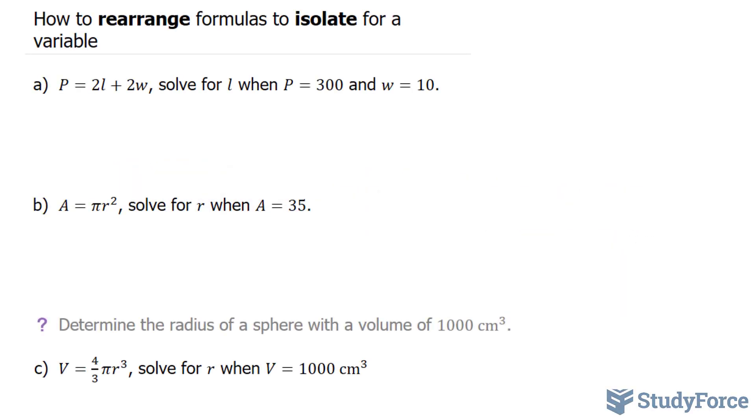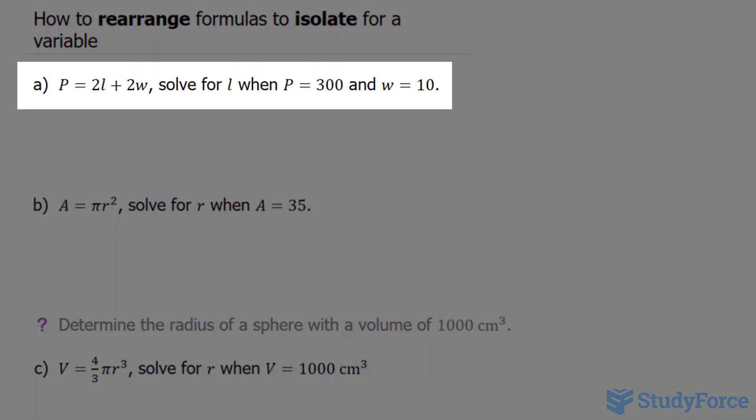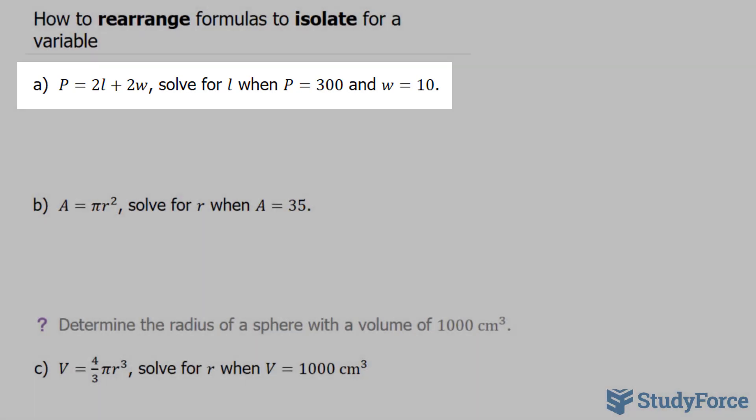In this demonstration, I'll show you how to rearrange formulas to isolate for a variable. Question A reads: P is equal to 2L plus 2W. Solve for L when P is equal to 300 and W is equal to 10.